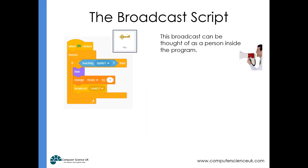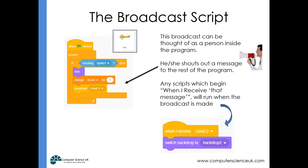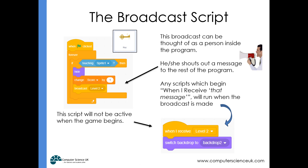The broadcast script — just to remind you from year seven — you can think of it as a person inside the program broadcasting a message to the rest of the program, shouting it out. If another script uses the 'when I receive' hat block on top of it, that script will run at that moment in time. So in the stage we have a 'when I receive level 2' broadcast hat, and we then switch backdrop to backdrop 2. This means that script is not run at the start of the game, but only becomes active when that broadcast is made.